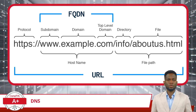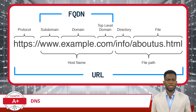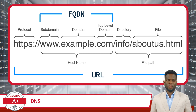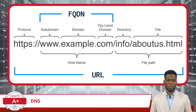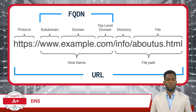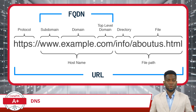When you use this FQDN in an attempt to search for a device, it sends a request to a DNS recursive server. This recursive server, also known as a DNS resolver, is specifically designed to handle DNS queries. The DNS recursive server then starts the process of finding the IP address that matches the FQDN you're searching for.